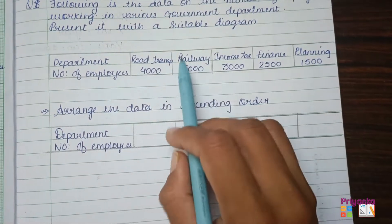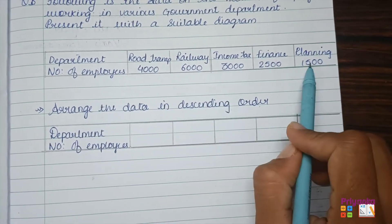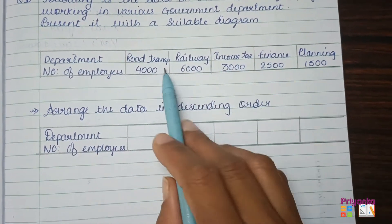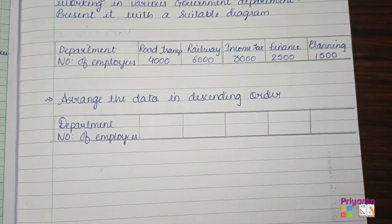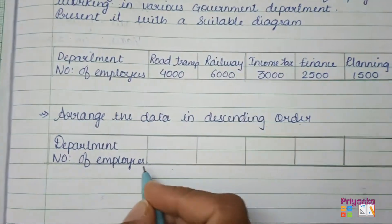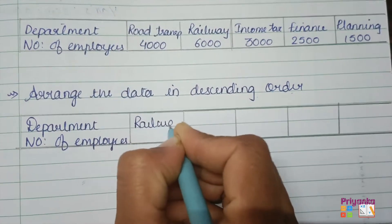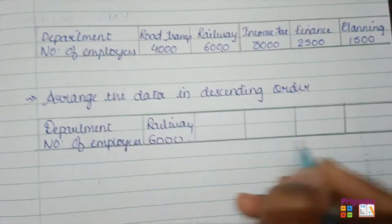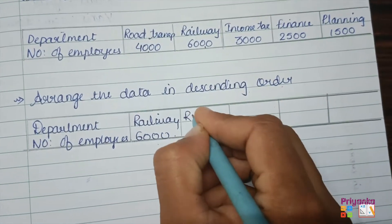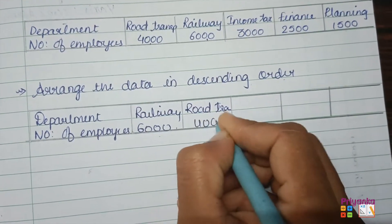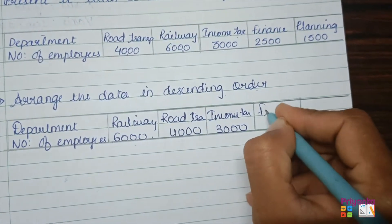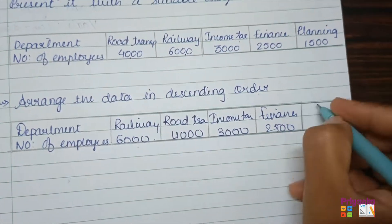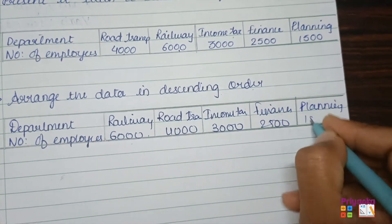When department names are given, the arrangement can be changed to descending order, which makes it easy to visualize which one is more and which one is less. We can see Railway comes with the highest number of employees: six thousand. Next is Road Transport with four thousand, Income Tax with three thousand, Finance with two thousand five hundred, and Planning with one thousand five hundred.